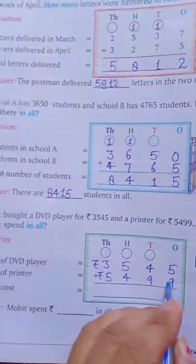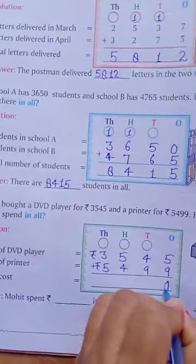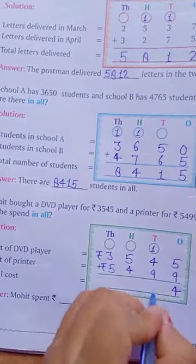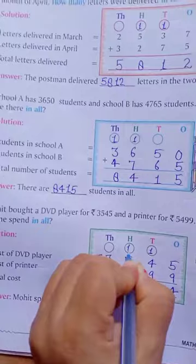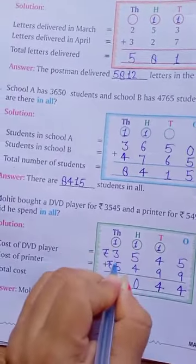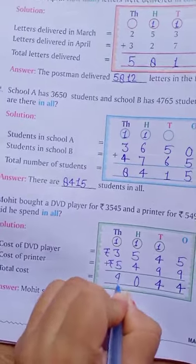So, total cost. For total cost, we add our numbers. 9 plus 5 is 14, write 4. 1 carry. 9 plus 1, 10 plus 4, 14, write 4. 1 carry. 5 plus 4, 9 plus 1, 10, write 0. 1 carry. 5 plus 3, 8 plus 1, 9.